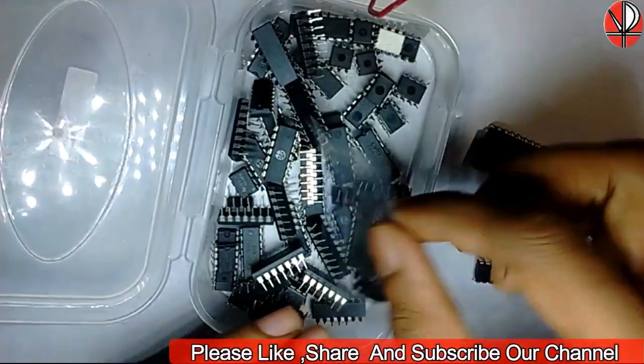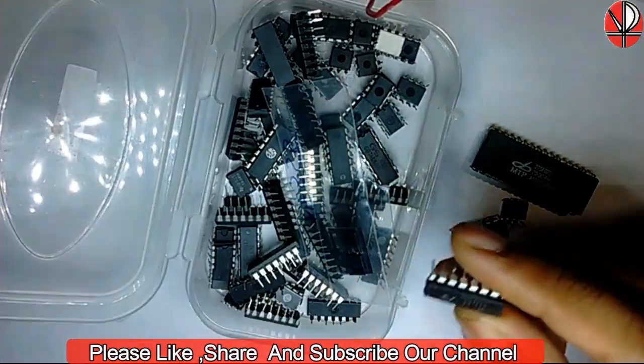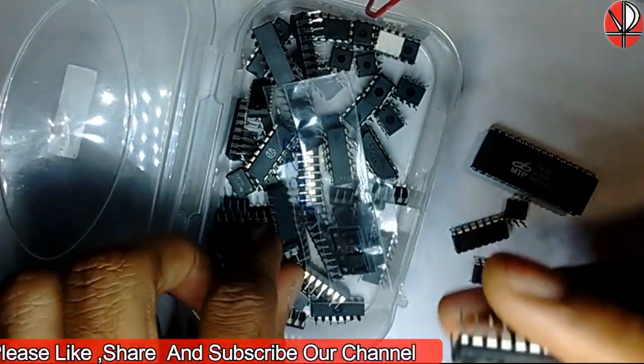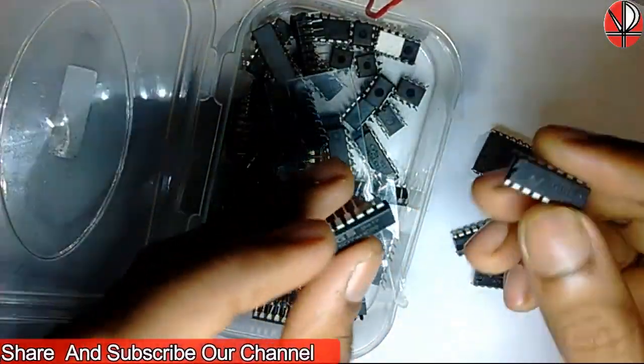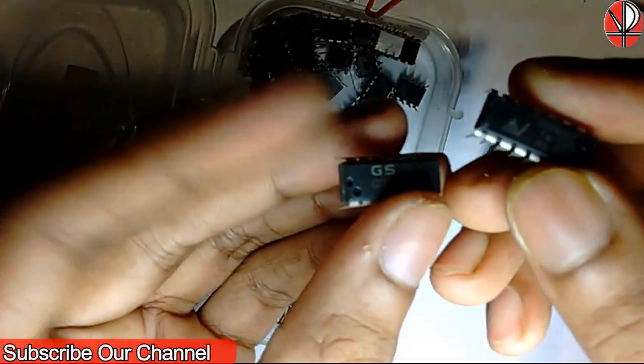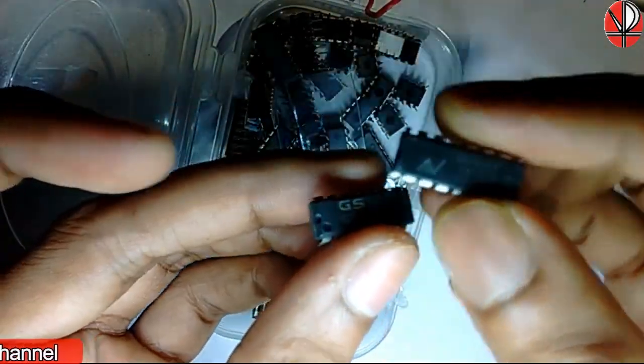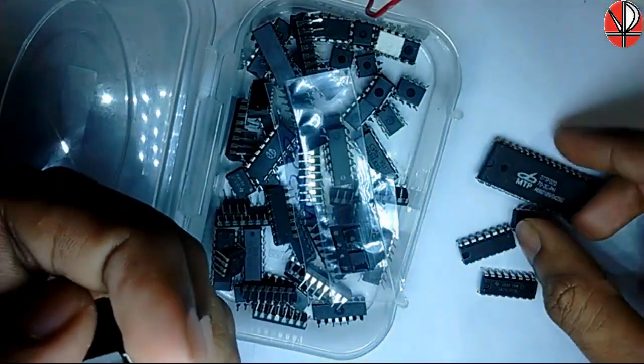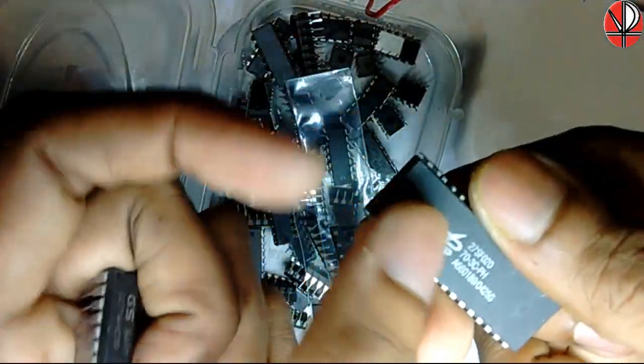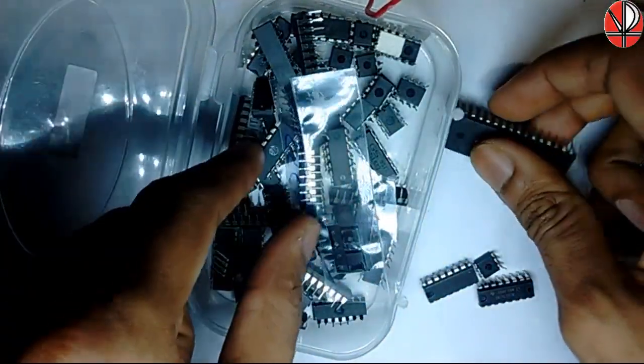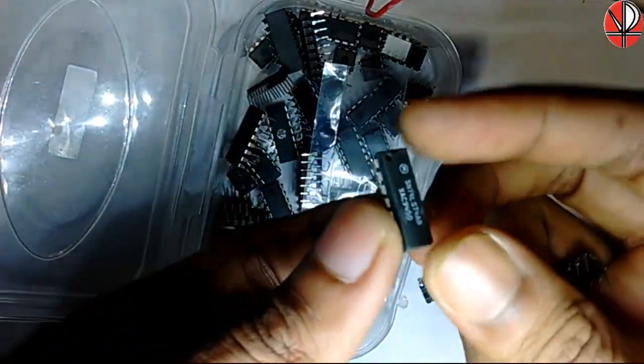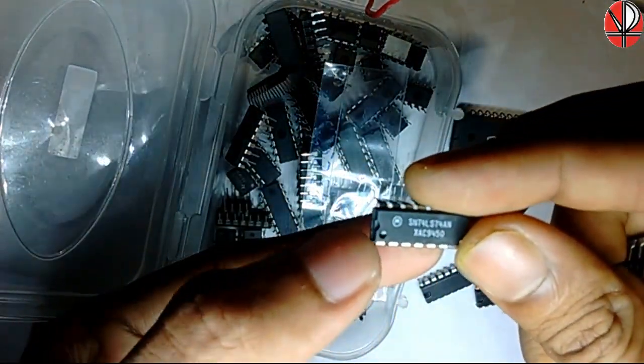So these are the different types of ICs. If you observe the IC carefully, you will see that every IC has one notch mark. This type of notch marks are available here. You see in this IC this is the notch mark, and you see this is the notch mark.